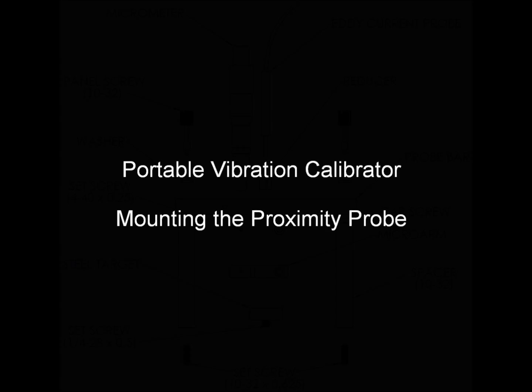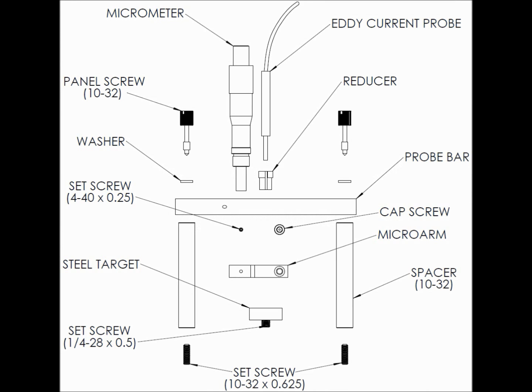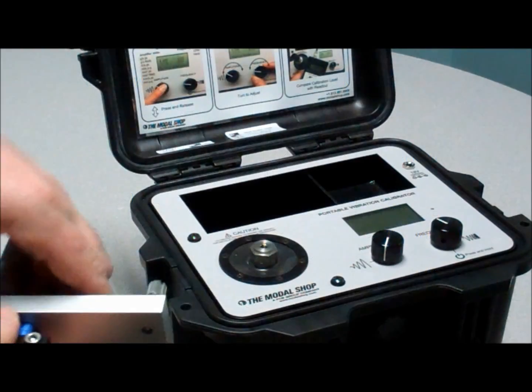Installing the Proximity Probe Calibration Kit to the Portable Vibration Calibrator. This assembly is intended to hold the Proximity Probe firmly attached to the micrometer in place above the steel target.